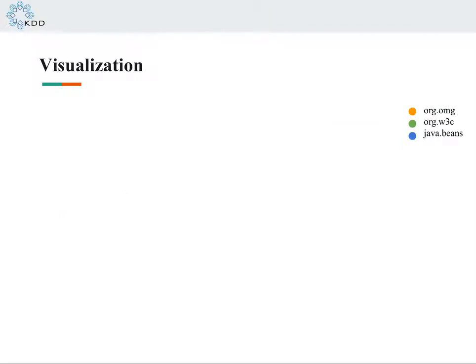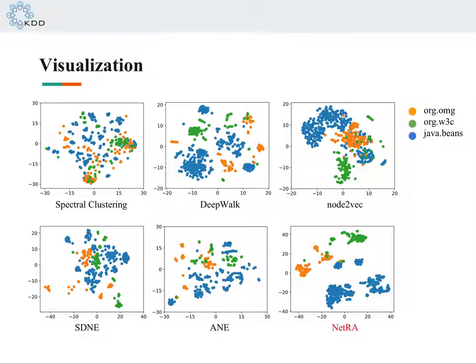Here shows the visualization results of the compared methods on JDK dependency network. Three different colors represent different classes. It can be seen that the eigenvector-based method spectral clustering cannot effectively identify different classes. Other baselines can detect the classes to some extent. Our model NetRA performs best as it can separate these three classes with large boundaries, except for a small overlap between green and red vertices.